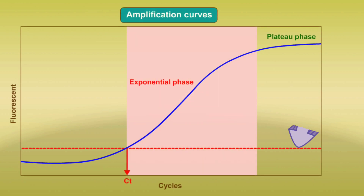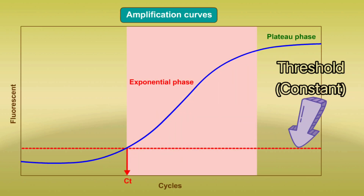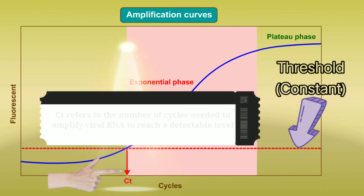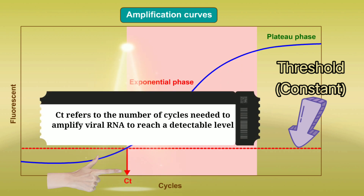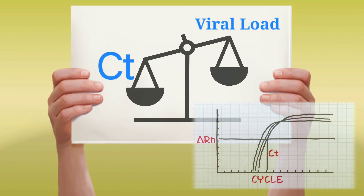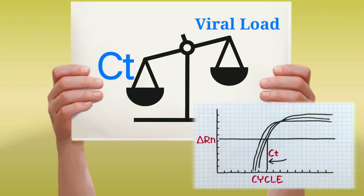The threshold value varies from kit to kit, but on average for COVID-19 it is around 24 and is constant, while the cycle threshold itself is subjective. To summarize: CT refers to the number of cycles needed to amplify viral RNA to reach a detectable level, and CT is inversely proportional to the viral load.